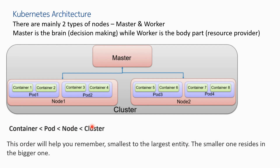If you see this hierarchy, this will help you understand how things work in Kubernetes. You have a cluster, and in the cluster you have nodes — the nodes can be master or worker nodes. In the nodes you have pods, and in pods you have containers. Finally, your application is working inside the container. This order helps you remember how things work in Kubernetes — the smaller unit resides in the bigger one.